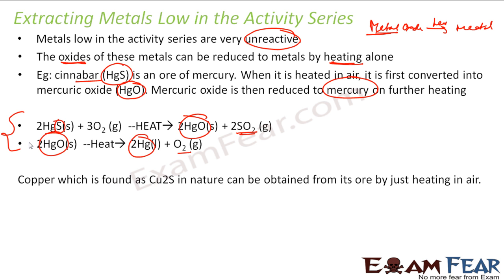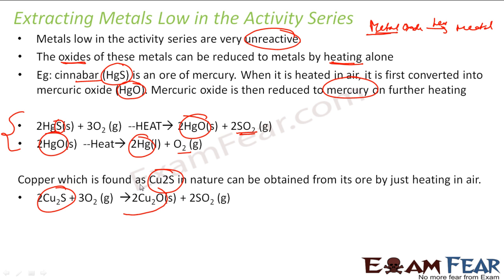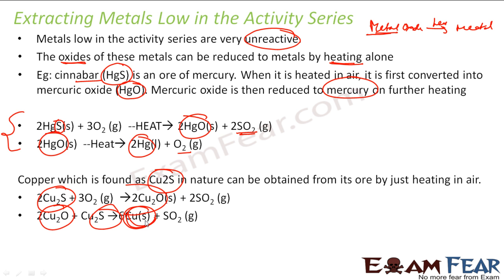Similarly, for copper also, you get it in Cu₂S form. You heat this Cu₂S, you get copper oxide, and this copper oxide you again heat and you get copper. So you just have to heat it and you get the metal. That is the thing with the low reactive metals.